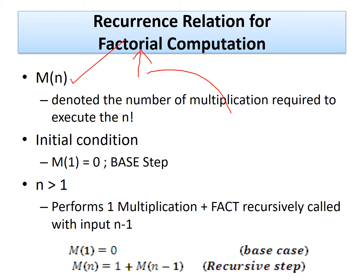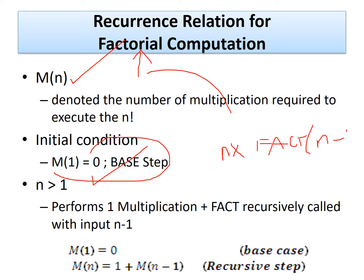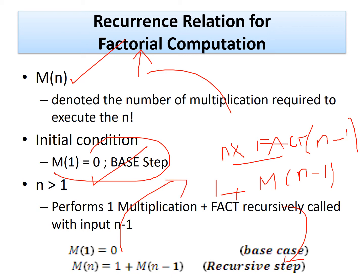To calculate the time complexity of factorial, define m(n) as the number of multiplications required to execute n factorial. The initial condition is m(1) = 0, meaning for the base case n=1 you perform no multiplication. For n > 1, you do 1 multiplication plus the factorial of n-1 recursively. So the recurrence relation for the number of multiplications is: m(1)=0, m(n) = 1 + m(n-1) for n>1.